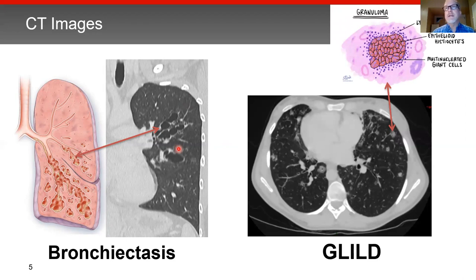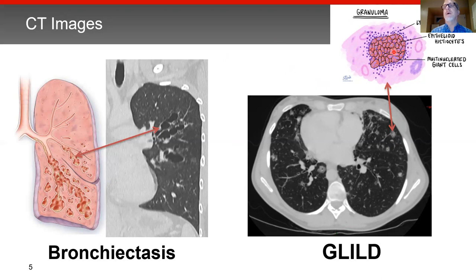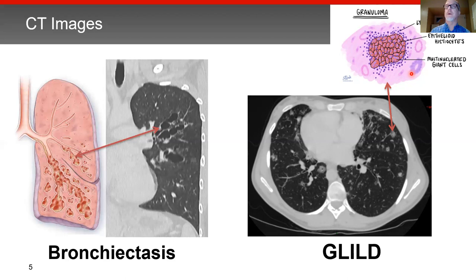Granulomatous lymphocytic interstitial lung disease has a different appearance on CT. This image is shown in the axial or cross-sectional plane, with the heart represented and an example of one of these granulomas in the left lung. The characteristic appearance includes an outer ring of lymphocytes and an inner part with epithelioid histiocytes in multinucleated giant cells — scavenger cells that engulf infectious particles, which can be walled off in the center of these granulomas. This can be associated with non-infectious causes or with certain infections in the lung.